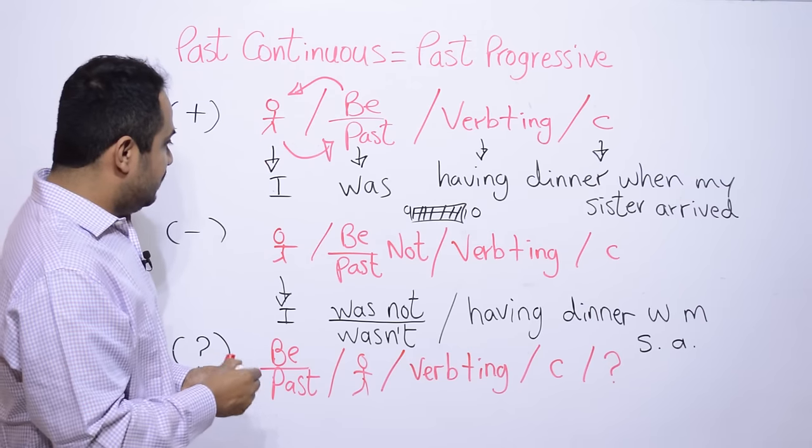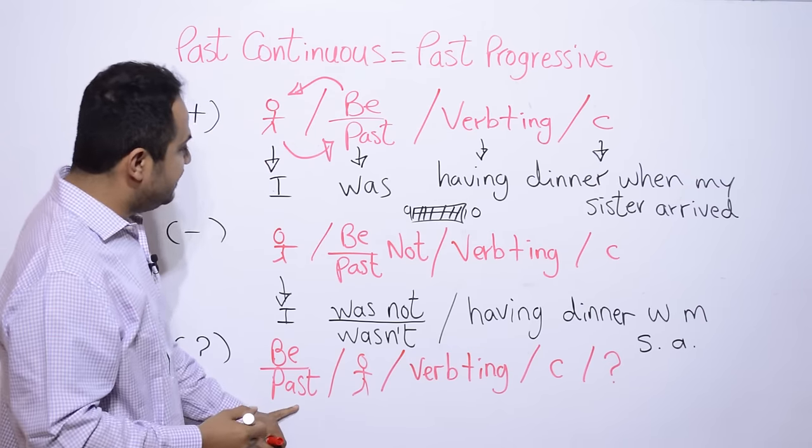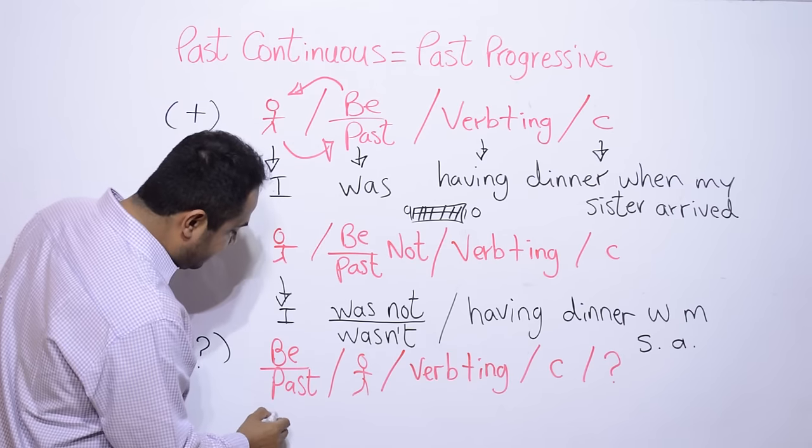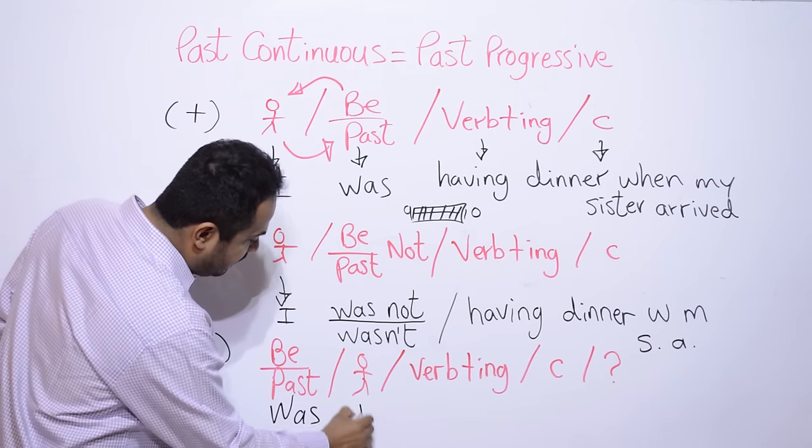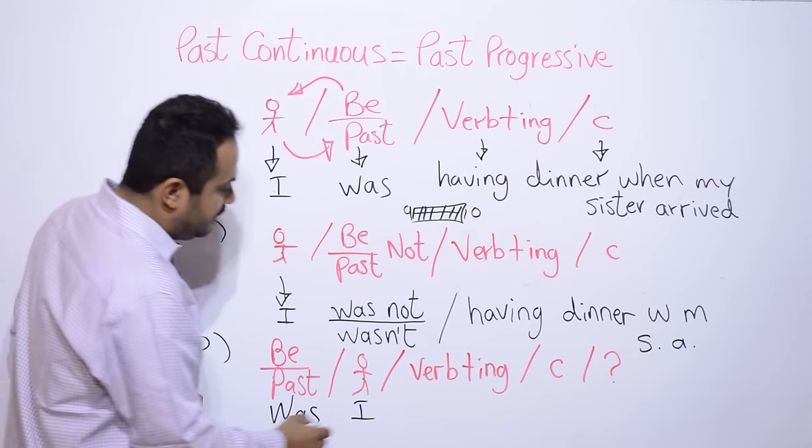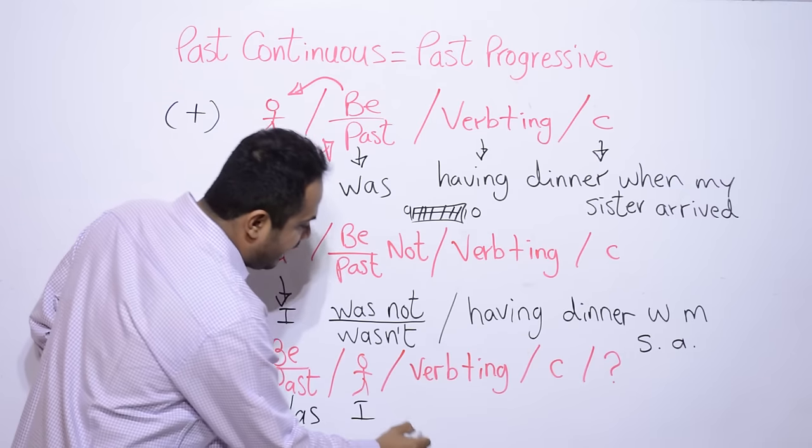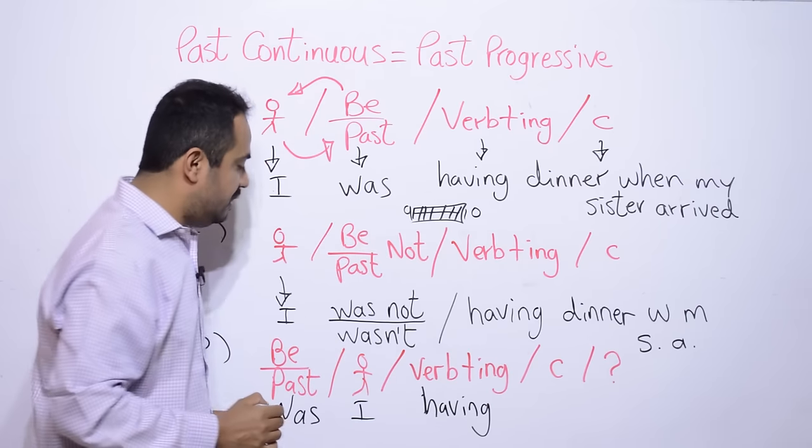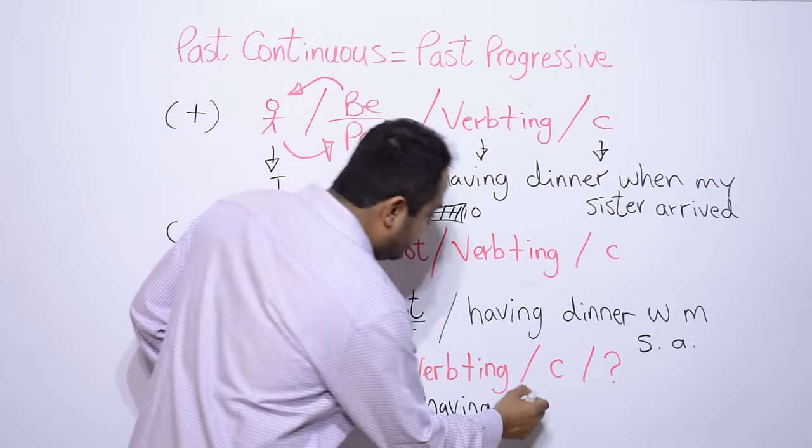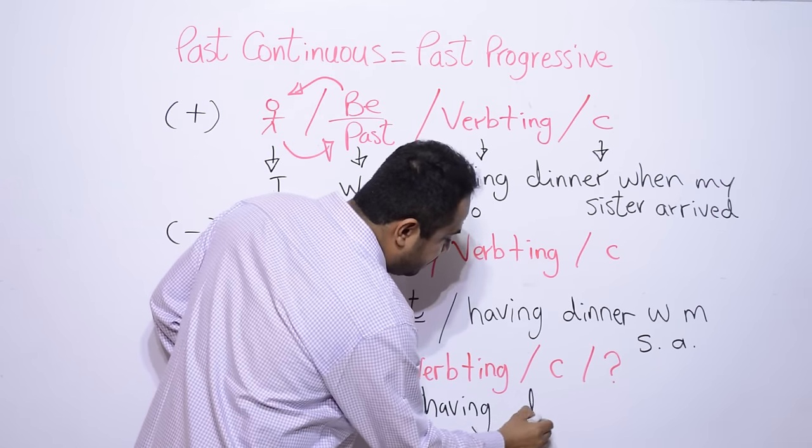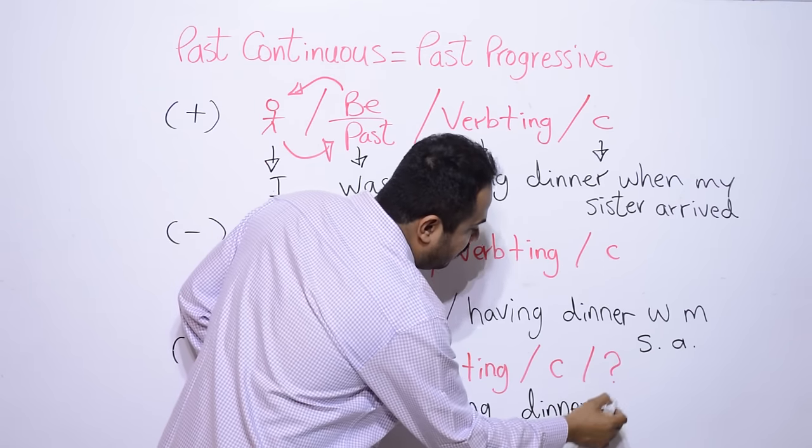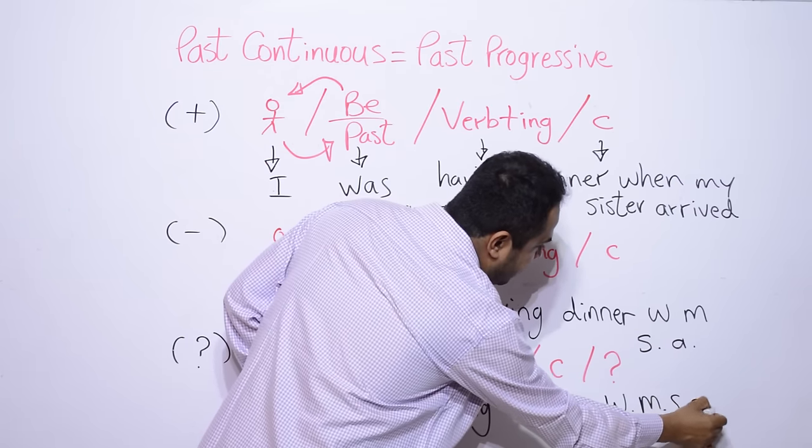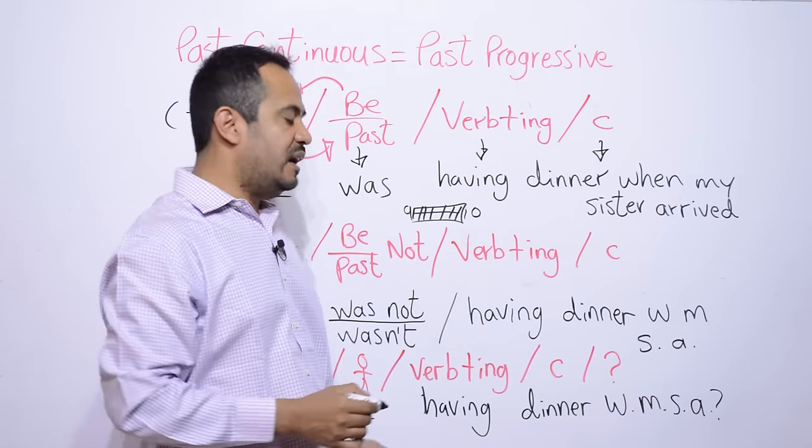Entonces vamos a hacer esta pregunta. Nos quedaría be past. Quedamos que es was. Y aquí nos quedaría was. Después verbo con ing having. Was I having el complemento dinner when my sister arrived? Y cerramos la pregunta.